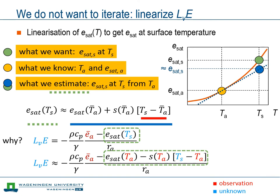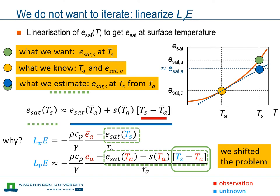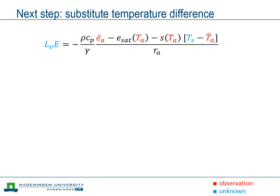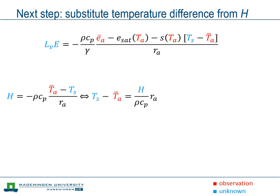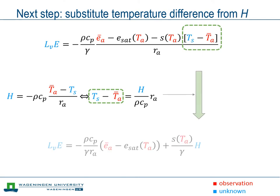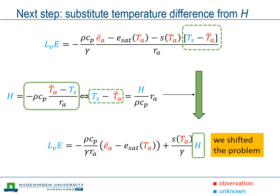Now let's substitute our linearized estimate into the latent heat flux expression. This looks all very nice, but it's quite lengthy. With this step, we've introduced a new problem: we still have the unknown surface temperature on the right hand side. After the linearization step, we now need to finally get rid of the surface temperature. What we will use for this is the resistance expression for the sensible heat flux, rewritten to give an expression for the temperature difference between air and surface. When we substitute this into our expression for the latent heat flux, we get rid of the surface temperature — but in turn, we now have the unknown sensible heat flux on the right hand side.